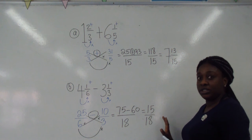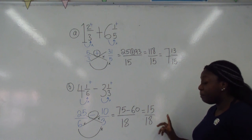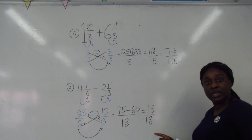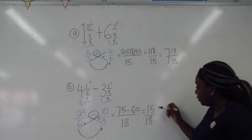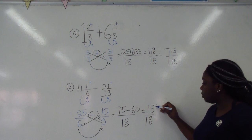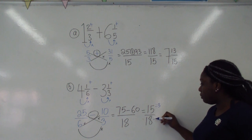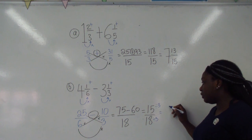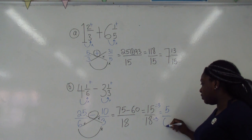Luckily, this fraction is not a top-heavy, but it can be simplified. If you look at both numbers, they're both in the 3 times table, so we can divide both of them by 3, which is going to give us 5 out of 6.